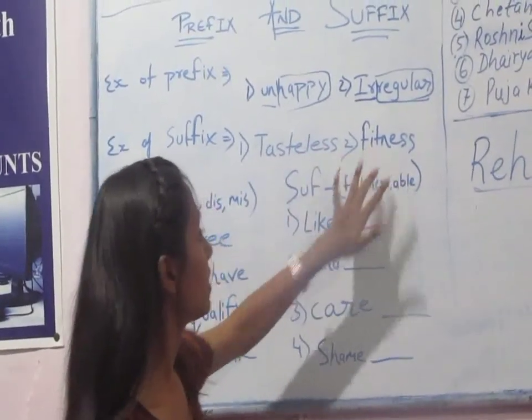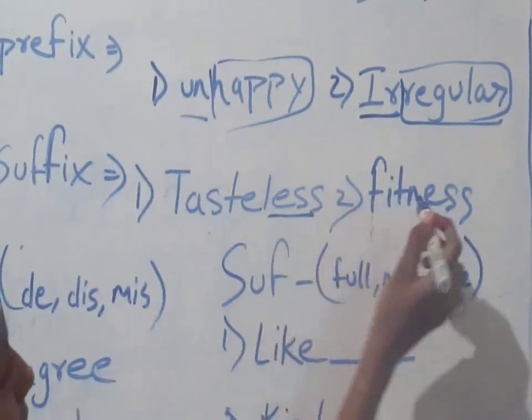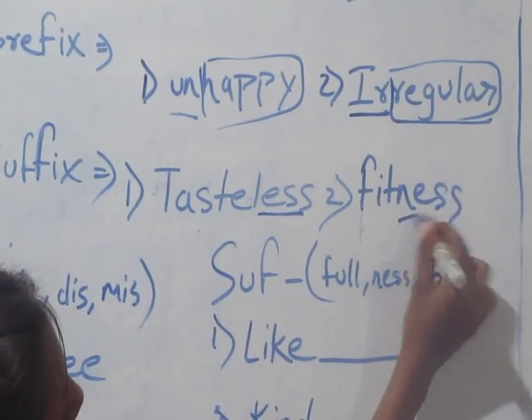Like here, example: tasteless and fitness. Here less is a suffix and here ness is a suffix.